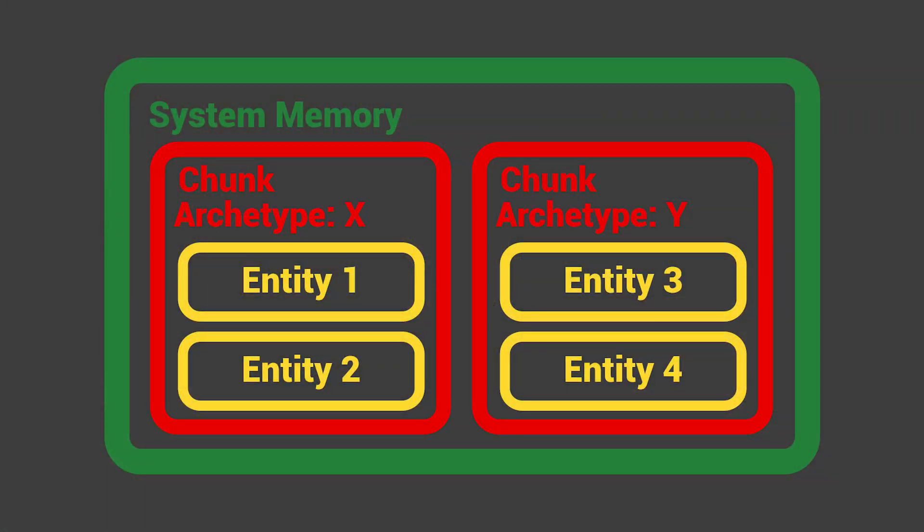A chunk is basically a block of memory which consists of all the entities of a given archetype. You can think of an archetype as basically a blueprint of an entity with a given set of components. So if we had a dozen entities in our game and they all had the same set of components, they would all fall under the same archetype, and in turn all those entities would be in that one single chunk. We're just finding that chunk in memory and iterating through all the entities within it.